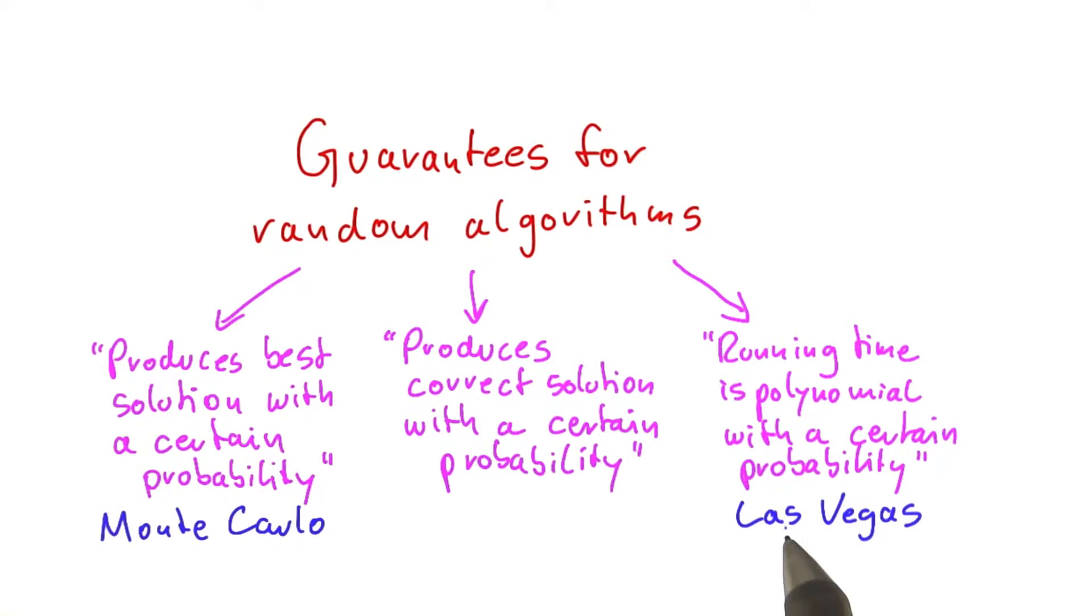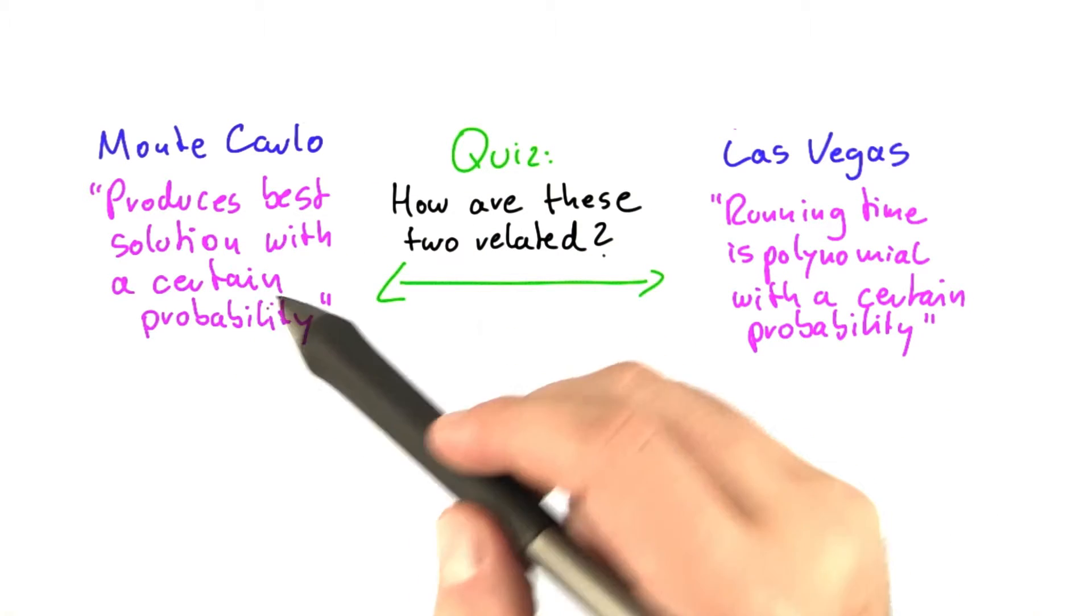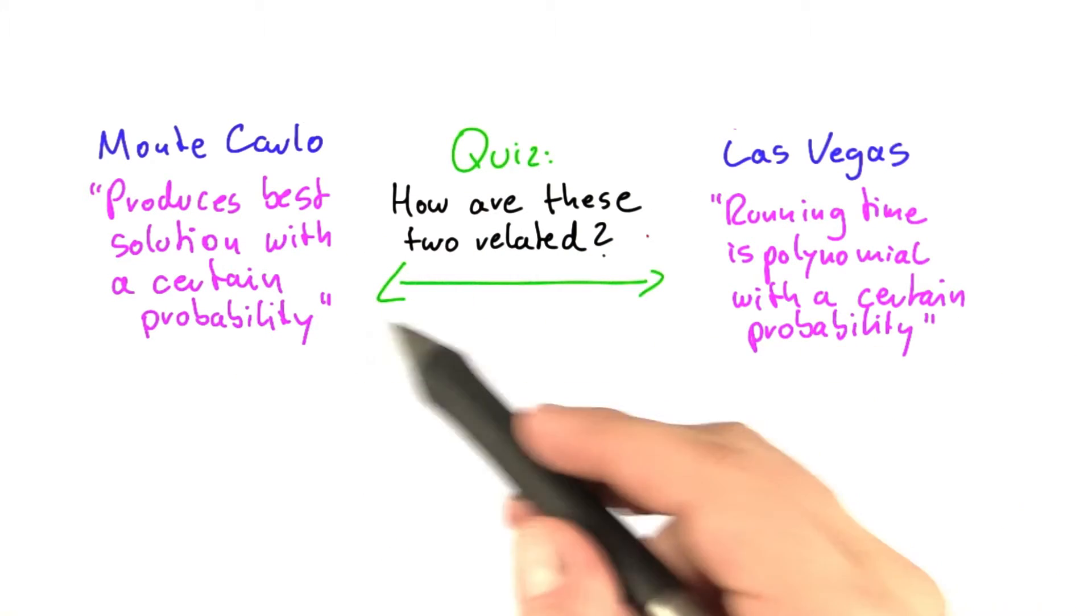Now the two approaches, Monte Carlo and Las Vegas, are actually related to each other. And if you think about it for a little while, I think you can figure that out yourself. So my question for you is how are Monte Carlo algorithms and Las Vegas algorithms related to each other?